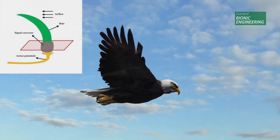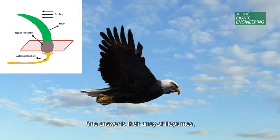What makes birds such agile flyers? One answer is their array of phylloplumes, hair-like feathers that detect tiny changes in airflow.